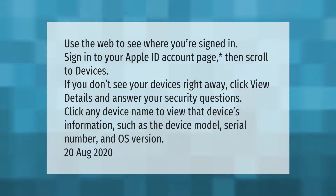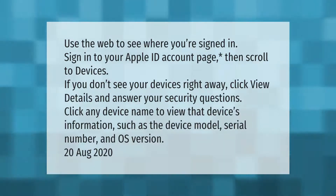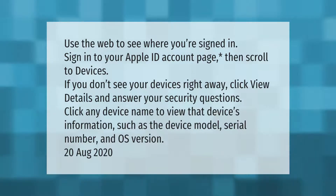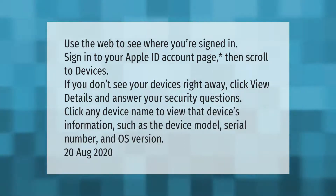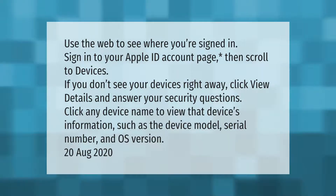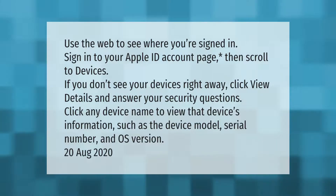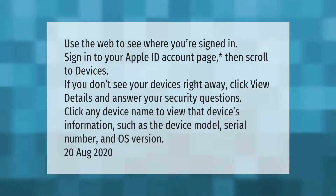Use the web to see where you're signed in. Sign in to your Apple ID account page, then scroll to Devices. If you don't see your devices right away, click 'View Details' and answer your security questions. Click any device name to view that device's information, such as the device model, serial number, and OS version.